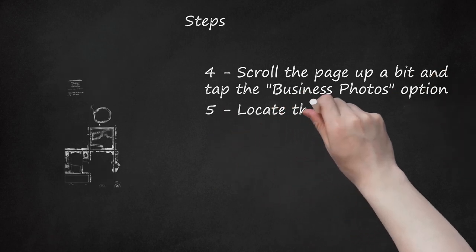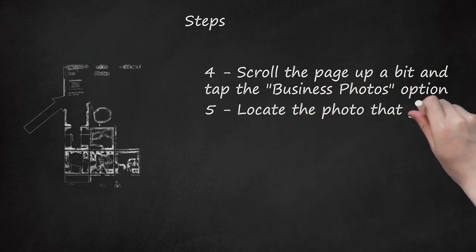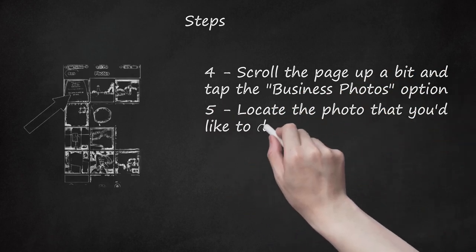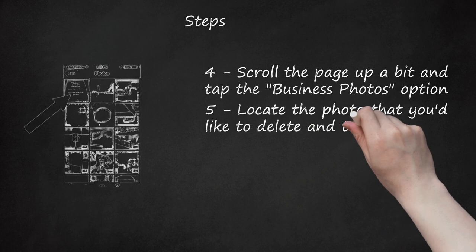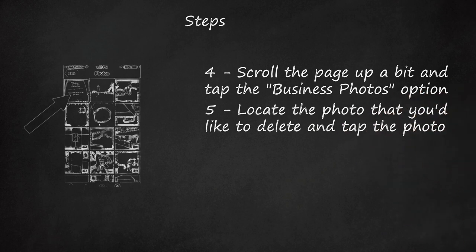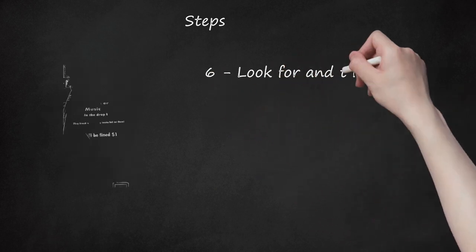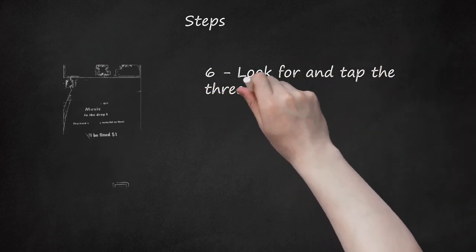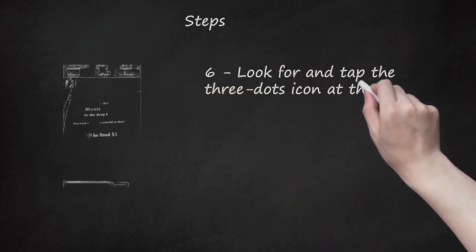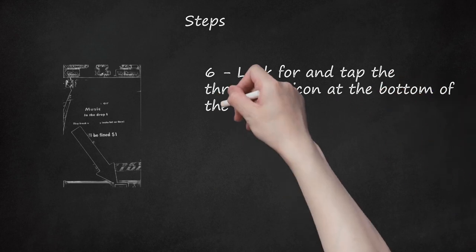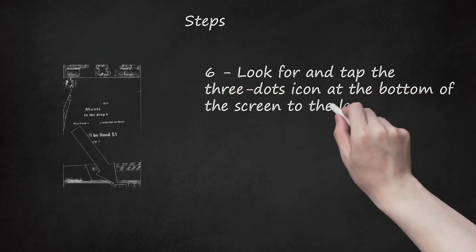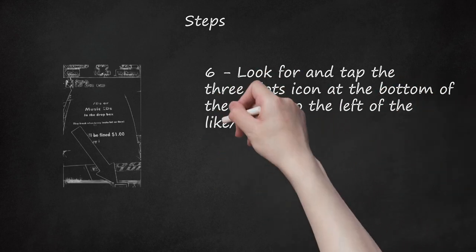5. Locate the photo that you'd like to delete and tap the photo. 6. Look for and tap the 3 dots icon at the bottom of the screen to the left of the like thumbs up button.